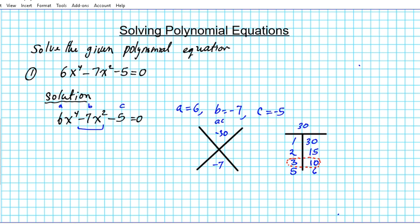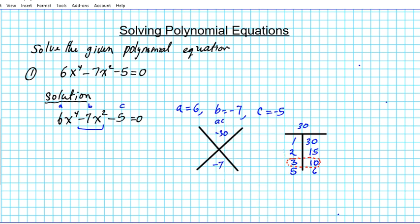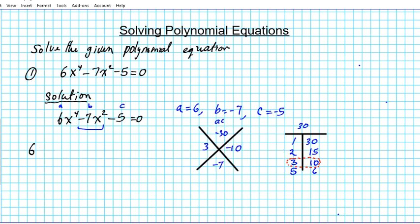So let's insert it into our X game. We're going to have AC, I mean the two numbers will be 3 times negative 10. Alright, so we're going to replace the middle number with these two. So we're now going to have 6x^4.